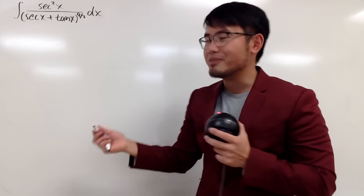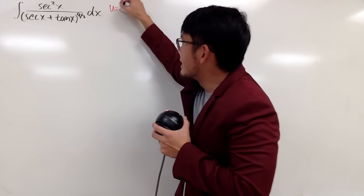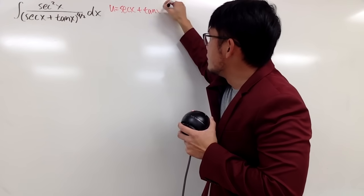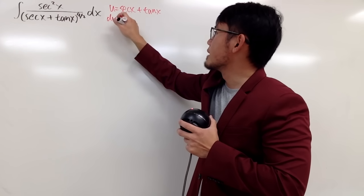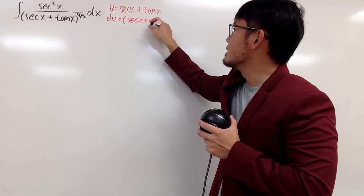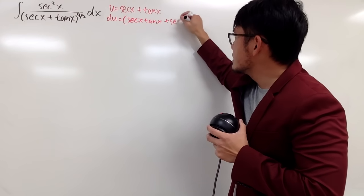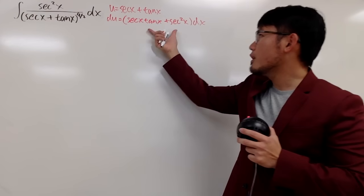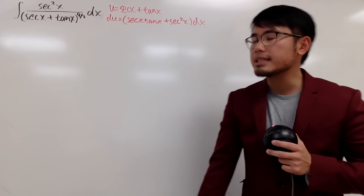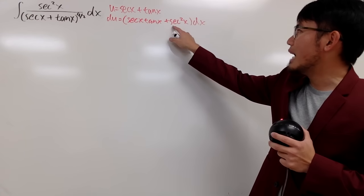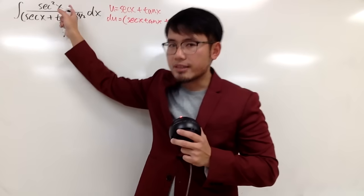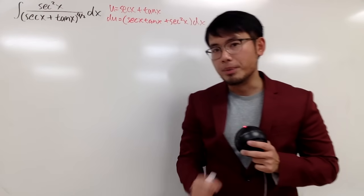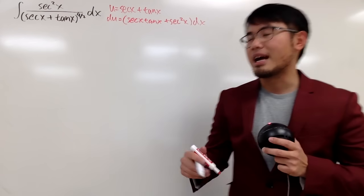I would let u equal to sec x plus tangent x to see what will happen. So let me just write that down. Take u to be sec x plus tangent x, and then differentiate both sides. We get du equals sec x times tangent x plus sec squared x dx. I noticed that we have sec squared x on the top, so if I can invite this term to be on the top as well, this integral will be very easy. Let's make that happen.